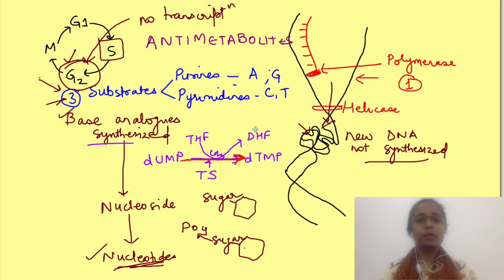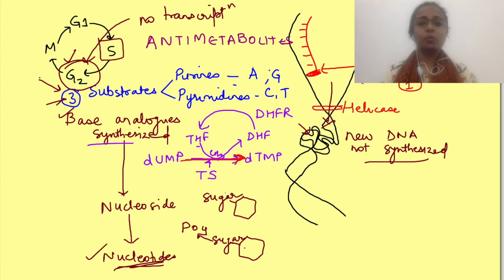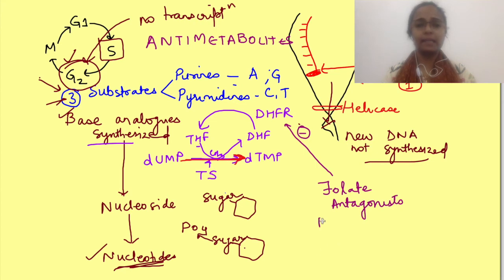Now for this reaction to occur again, dihydrofolate should be converted back to tetrahydrofolate by the enzyme dihydrofolate reductase, so that tetrahydrofolate is available again for transferring the methyl group. So there are drugs which block this enzyme dihydrofolate reductase known as folate antagonists. Example is methotrexate.